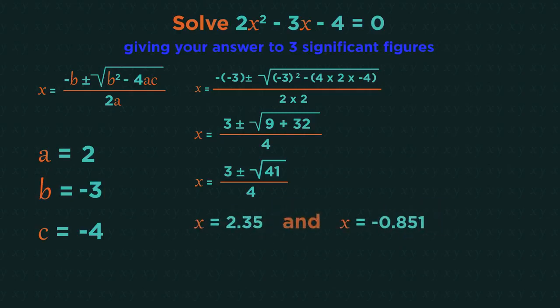From your calculator you should get x equals 2.35 and x equals minus 0.851.